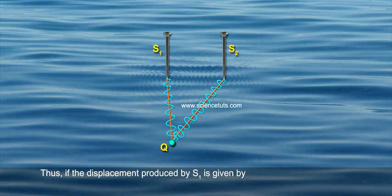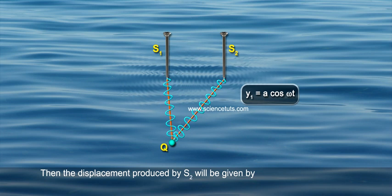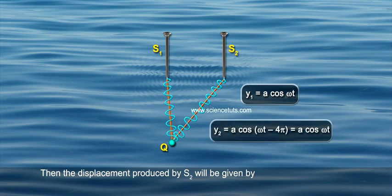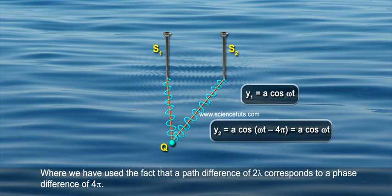Thus, if the displacement produced by S1 is given by Y1 = A cos ωt, then the displacement produced by S2 will be given by Y2 = A cos(ωt - 4π) = A cos ωt, where we have used the fact that a path difference of 2λ corresponds to a phase difference of 4π.